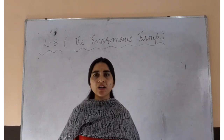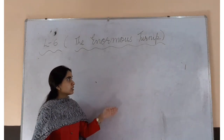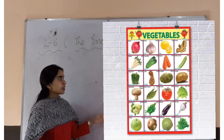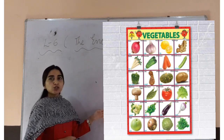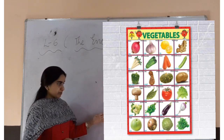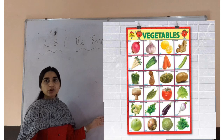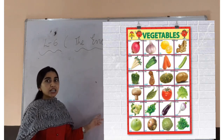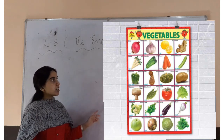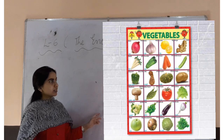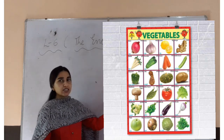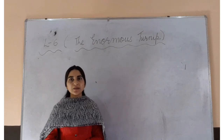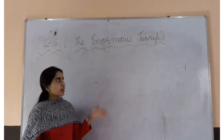Here, first of all, see this is the list of vegetables. Here you can see so many vegetables. Students, you have to identify over here about turnip. Where is turnip? Yes, this is turnip. Turnip means shalna. This is the list of vegetables.